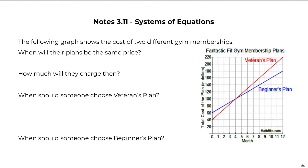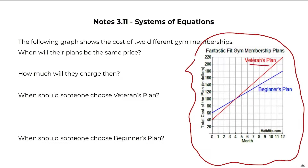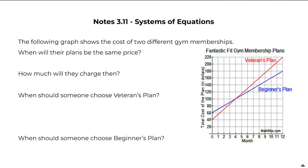Notes 3.11 are on systems of equations. A system of equations is where we have two graphs on top of each other in the same grid and we see where they intersect. Looking at this graph, we have the veterans plan and the beginners plan, and we're going to see where those plans intersect.